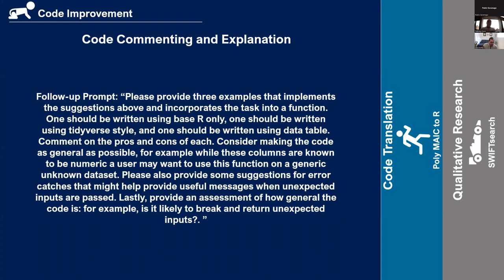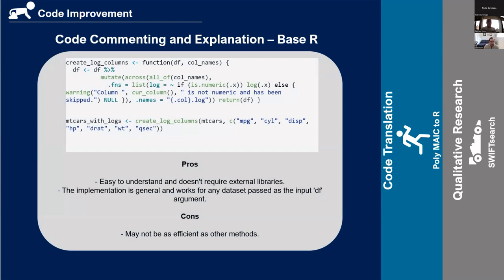I then asked: can you give me three examples — one in base R, one in tidyverse style, and one with data.table — applying these best practices, and give me the pros and cons of each? I also wanted to avoid skipping the if-else check, so I said consider making the code as general as possible. For example, while the columns are known to be numeric, we might want to use this on a dataset we aren't as familiar with. I also asked for error catches and useful messages when unexpected inputs are passed.